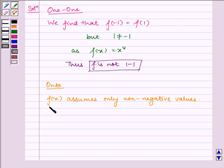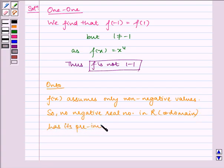So no negative real number in R of codomain has its pre-image in R of domain. Thus, f is not onto.